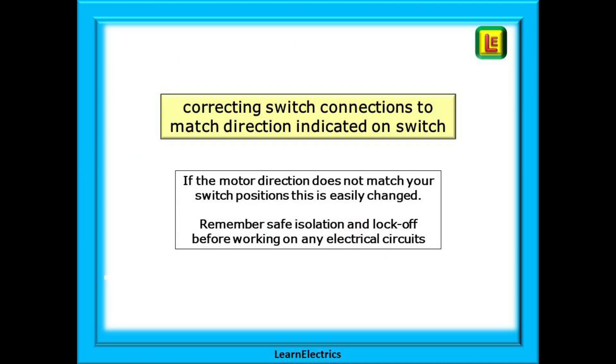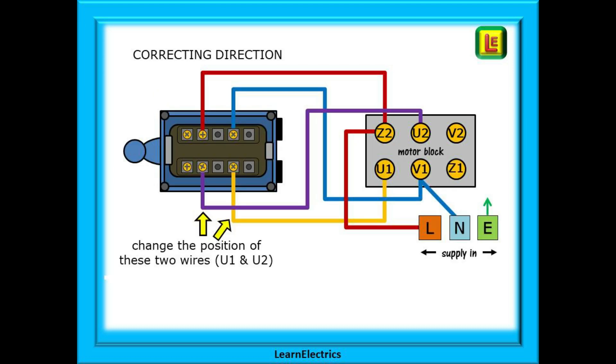The second variation is when the drum switch says forwards and the motor is moving in reverse for the customer's expectations, and when in reverse the customer says that that is his forwards direction. So if the motor direction does not match your switch positions this can easily be changed. But do remember safe isolation and lock off before working on any electrical circuits. All we need to do is to change the U1 and U2 connections over shown here by the two yellow arrows. Do not change the phase and neutral and hey presto the switching directions have been changed.